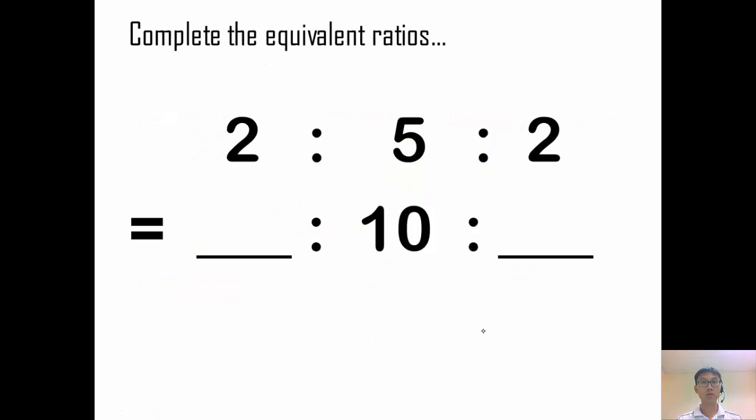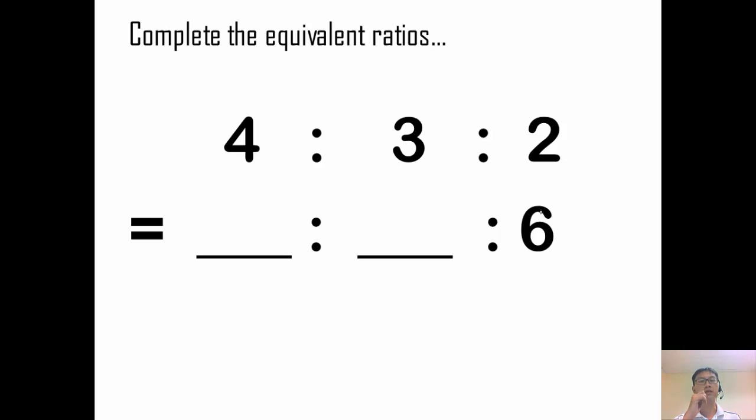So let's try this, complete the equivalent ratios. So I know that this is 10. So from 5 to 10, I times 2. So if I times 2 here, I need to do the same on all sides and all quantities. So 2 times 2 is 4, 2 times 2 is 4. So it's 4 is to 10 is to 4.